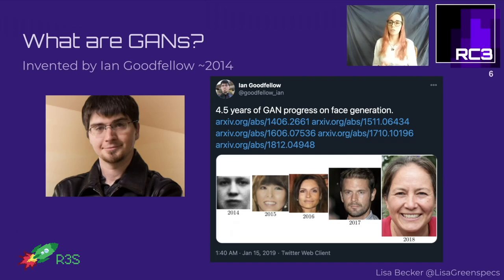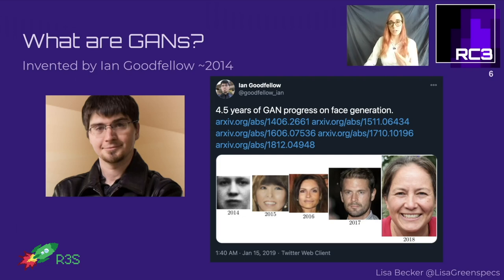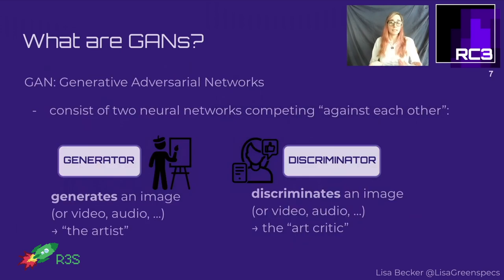We started on the left with a very pixelated black and white picture of a woman in 2014, going through the years up to 2018, where we already have a very photorealistic picture of a person that does not exist generated by a computer. Now, as seen on ThisPersonDoesNotExist, we even have hyper-realistic images of people we can't distinguish from real people anymore. GANs are short for generative adversarial networks.